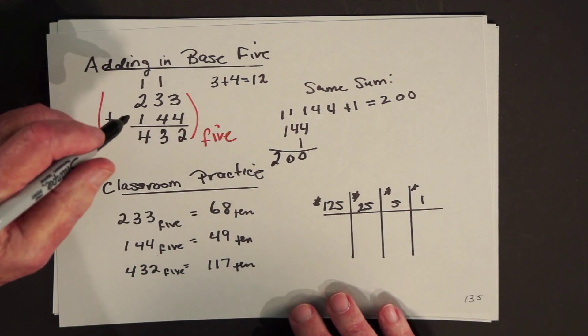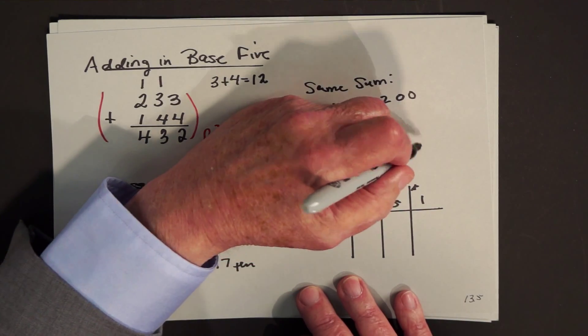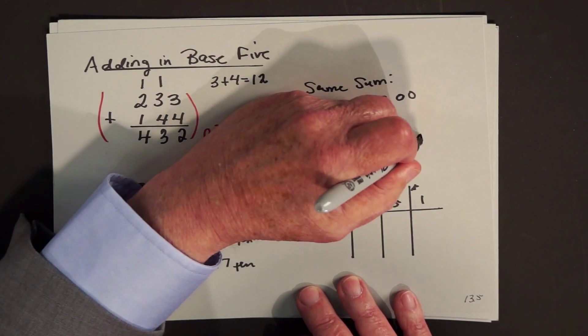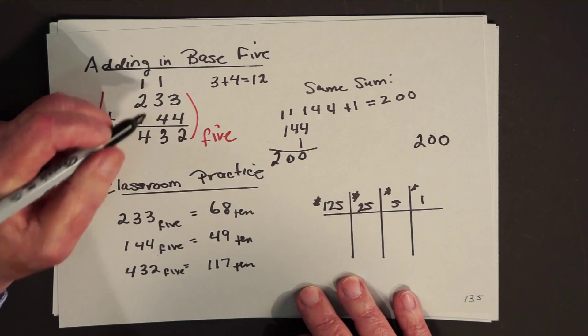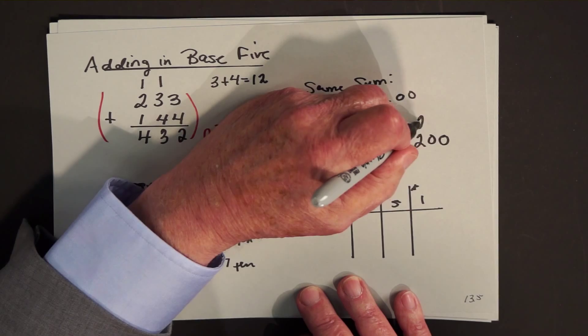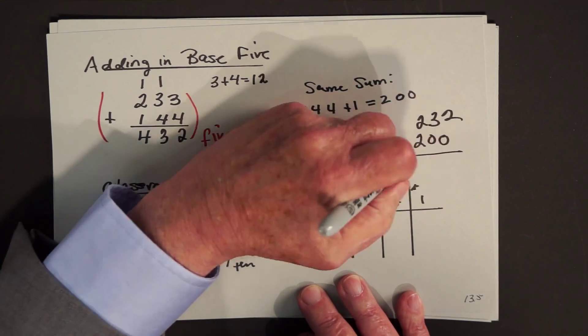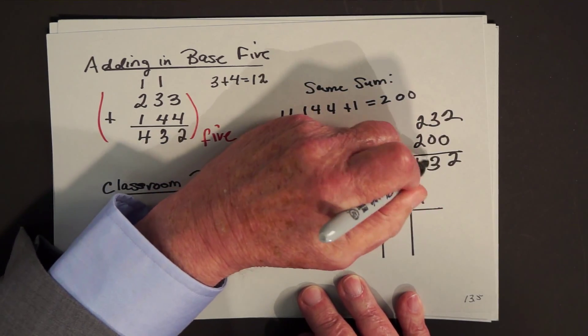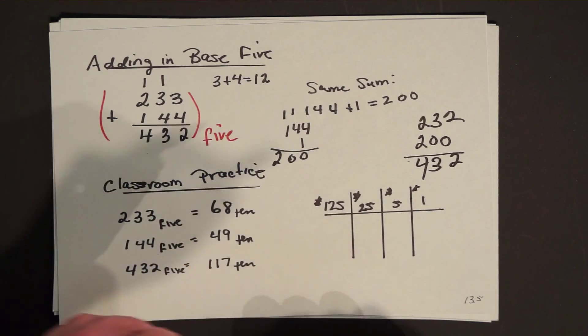So what I could do is, instead of writing 144, I can add one onto it and call that two, zero, zero. Take one away from this guy, so instead of being two, three, three, he becomes two, three, two. Now I add them up, same answer.